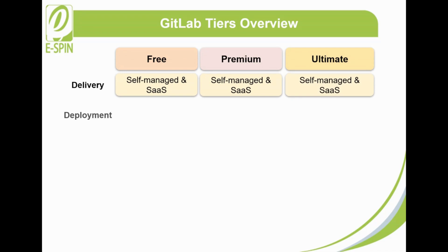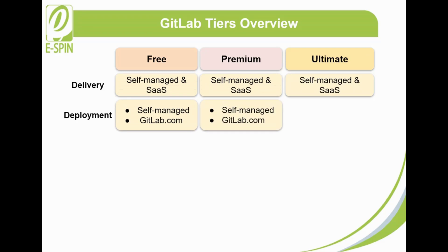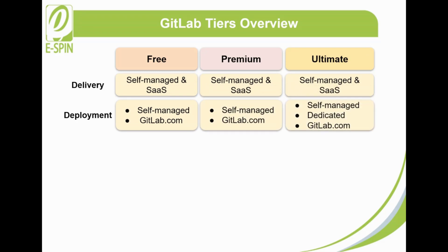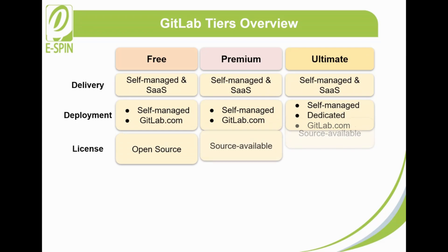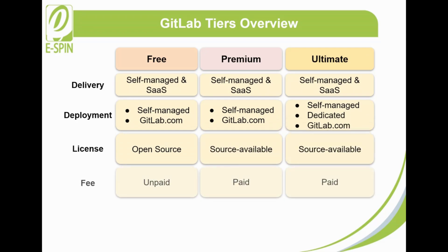The type of deployment for GitLab Free and Premium is either self-managed or gitlab.com, while GitLab Ultimate includes self-managed, dedicated, and gitlab.com. GitLab Free license is open source, while Premium and Ultimate are source available. Premium and Ultimate are the GitLab paid tiers.